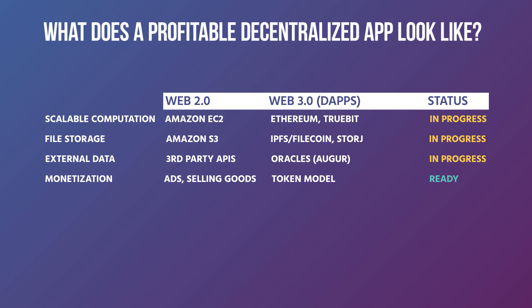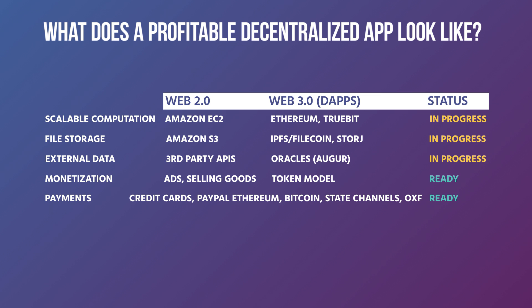You can think of the crypto token model as Bitcoin, Ethereum, or one of the many other cryptocurrencies available today. This leads to payments — today most internet transactions are done with credit cards, PayPal, or Venmo. In web 3.0, this essentially pulls down into Ethereum, Bitcoin, or many other tokens for specific applications. We'll get into the complexities of side blockchains, private blockchains, state channels, and Plasma channels further into the class.